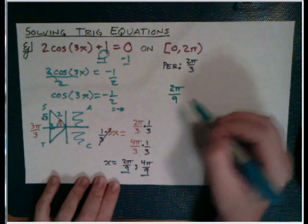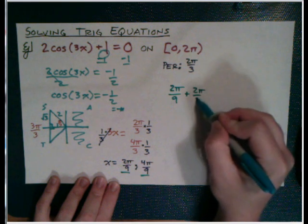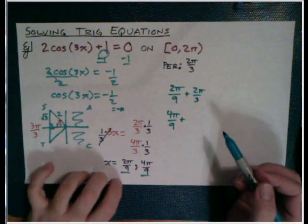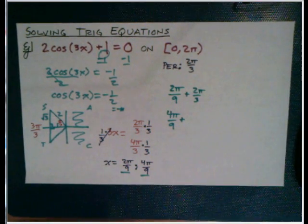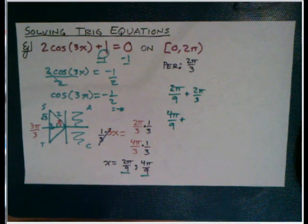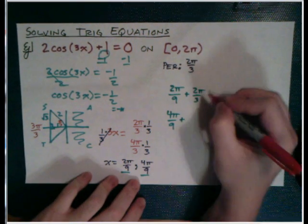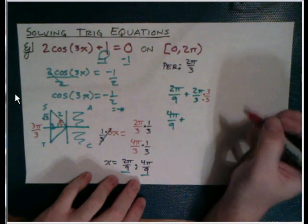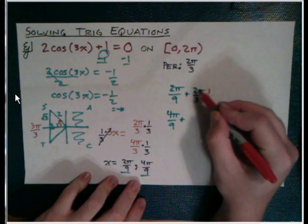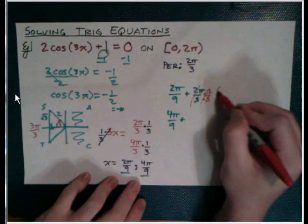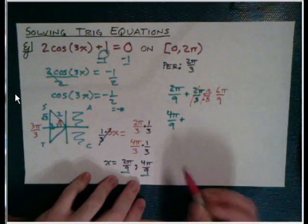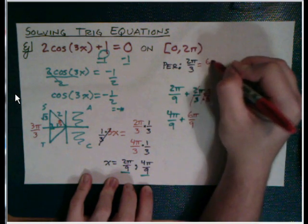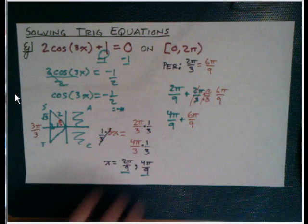Okay, so 2 pi over 9 plus my period, which is 2 pi over 3. And then 4 pi over 9 plus my period also. Now, unfortunately, our period of 2 pi over 3 isn't going to be easy to add to because they have different denominators. So before I do that, I'm going to change it to something that can add nicely. So I'll multiply up and down by 3, just so I can get a common denominator here. And that will make this equal to 6 pi over 9.